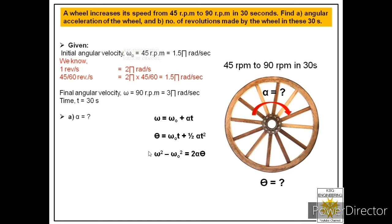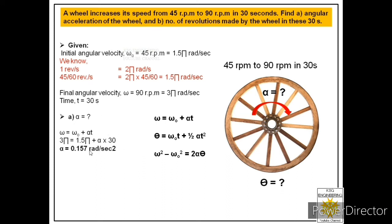We need to find which equation to use for angular acceleration. We have initial angular velocity omega naught, final angular velocity omega, and time — so we use omega equals omega naught plus alpha t. Substituting: 3π equals 1.5π plus alpha times 30. Solving, we get alpha equal to 0.157 radian per second squared. So we have found the answer to part A.